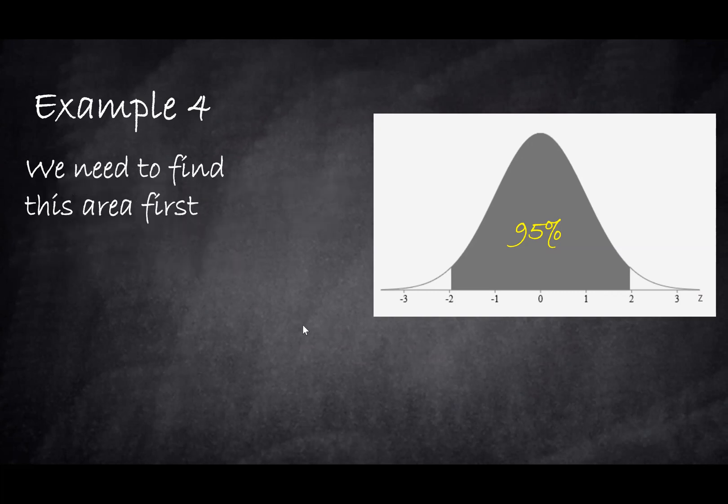In this scenario we need to find first this tail here. We know that the whole distribution is equal to one, and therefore we'll subtract 95% from one, and we got 5%. But this 5% represents both of the tails, both the left-hand side and the right-hand side tail. Our next step will be, because symmetry is one of the characteristics of the standard normal distribution, we can take the 5% and divide by 2, and then we get 2.5% each tail.